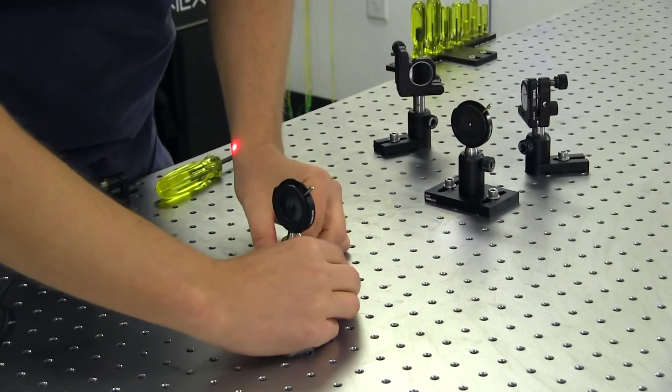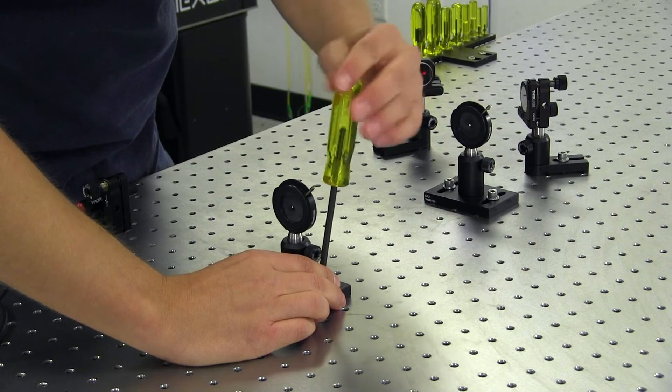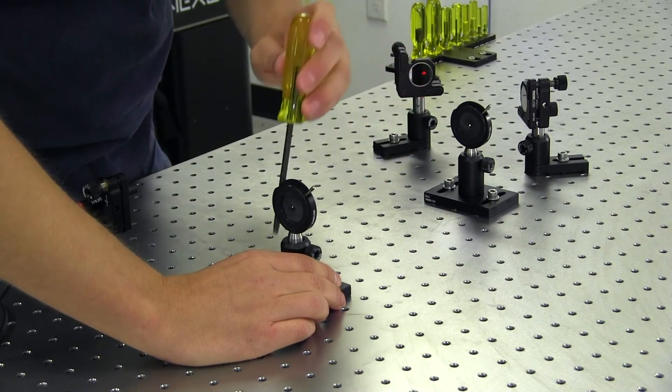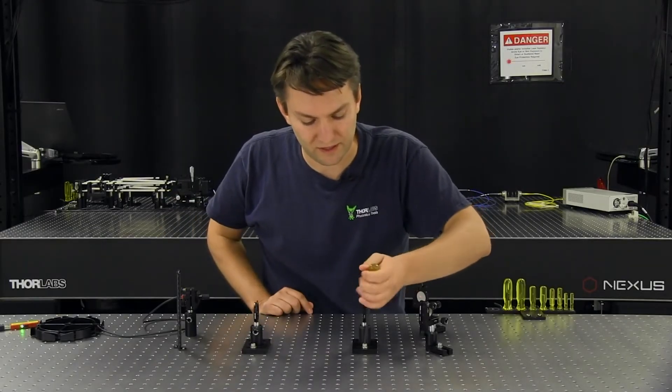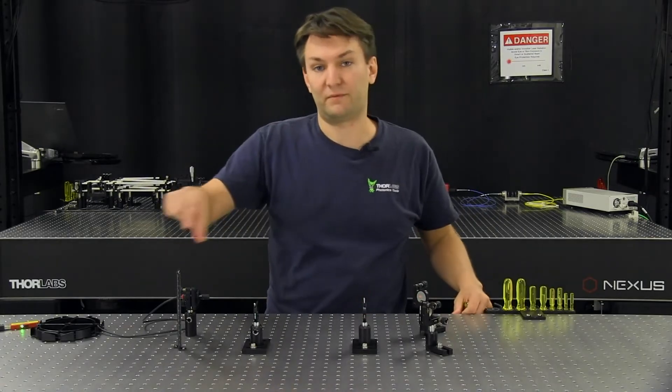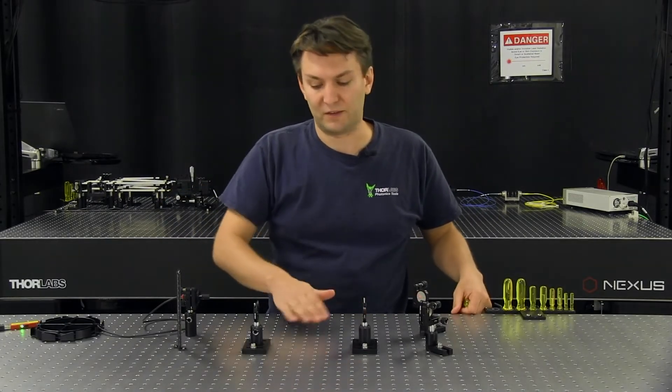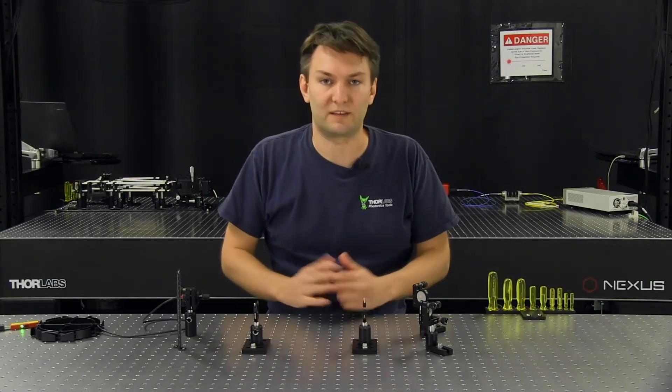Ideally, you would place these irises very far apart because the farther apart the two measurements, the more accurate you will be. But in this case, I'm keeping things relatively compact for this demonstration. In principle, I could do this with a single iris just like I did with my ruler and be moving that iris back and forth along the table. But by using the two irises, I can just keep them stationary and not have to be moving things all around.